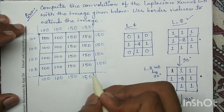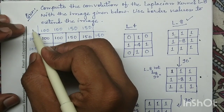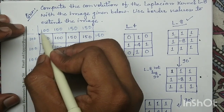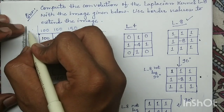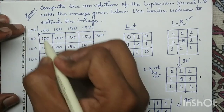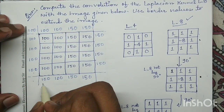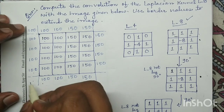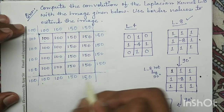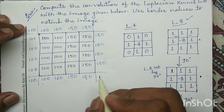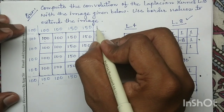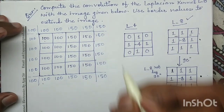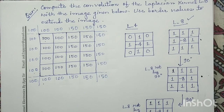Now looking at the four corner positions: for this corner position both neighboring pixels have the same intensity 100, so I will write 100. Similarly, at the next corner both corner elements have intensity 100, so I will write 100. At the third corner both elements have intensity 150, so I will write 150, and at the last corner also 150.